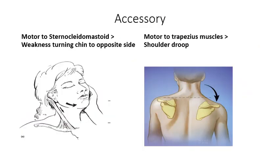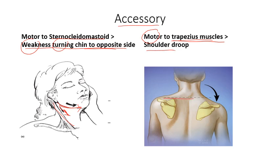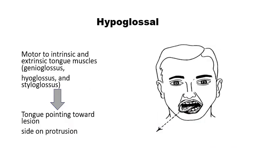Cranial nerve eleven has two major motor targets: the sternocleidomastoid muscle and the trapezius muscle. If the sternocleidomastoid muscle is damaged, there will be weakness of turning the chin to the opposite side — as seen in the figure, the force is applied in this direction to turn the chin. If the trapezius is damaged, there will be a dropped shoulder, as the normal elevation of the shoulder is lost.